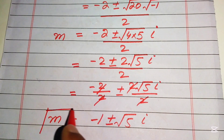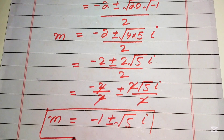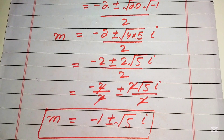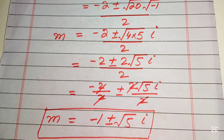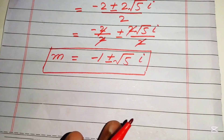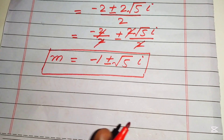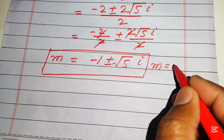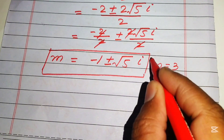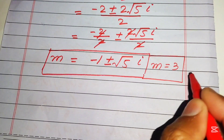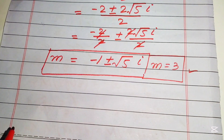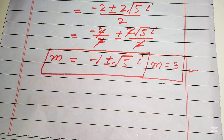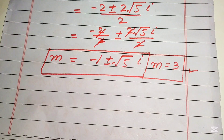These are the two complex roots of the given equation. Finally, the three roots of the given equation are m equals 3, and m equals minus 1 plus or minus root 5 times i. This is the final answer. Thank you so much for watching this video. Please subscribe to my channel for more exciting videos.